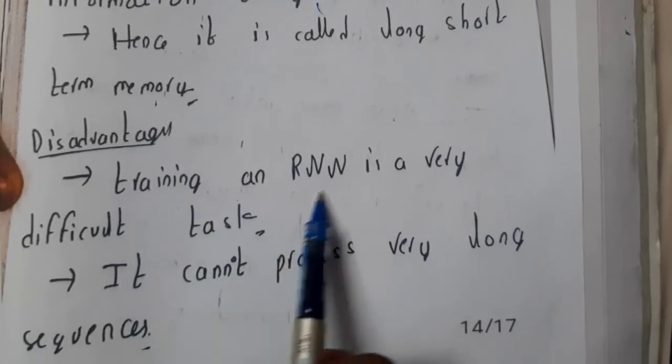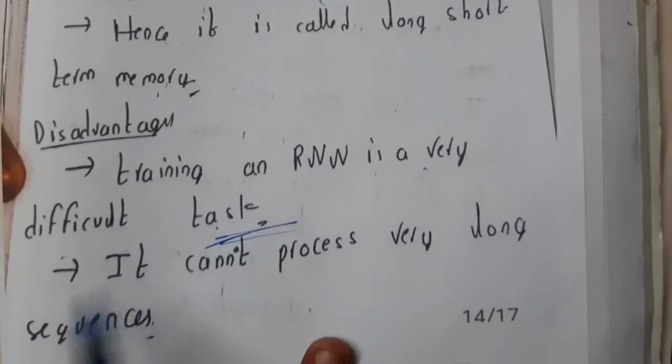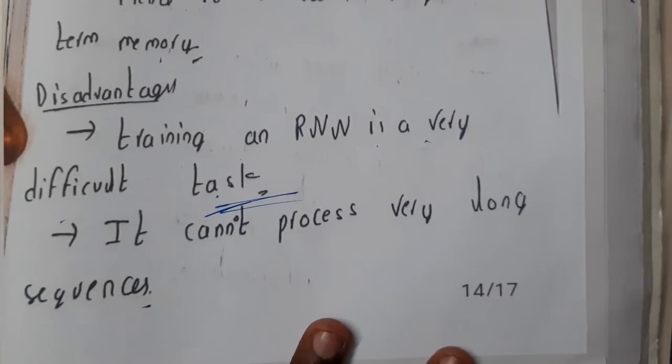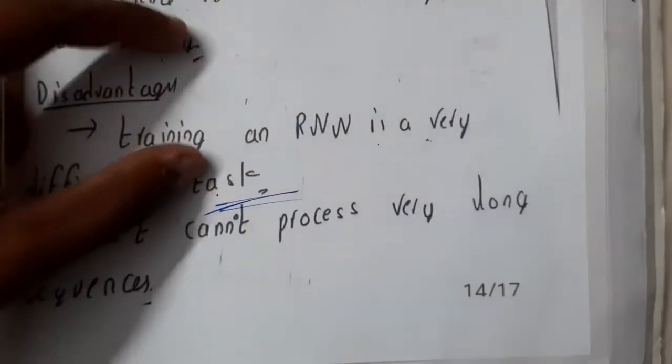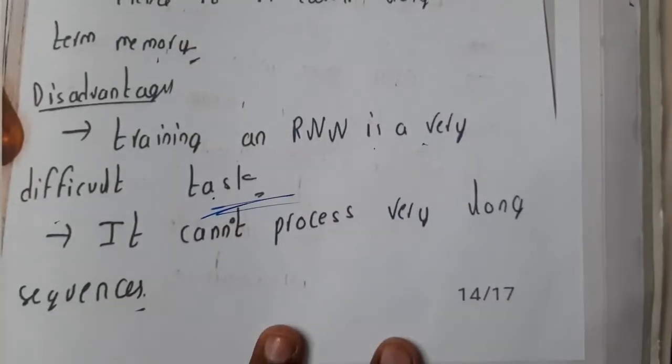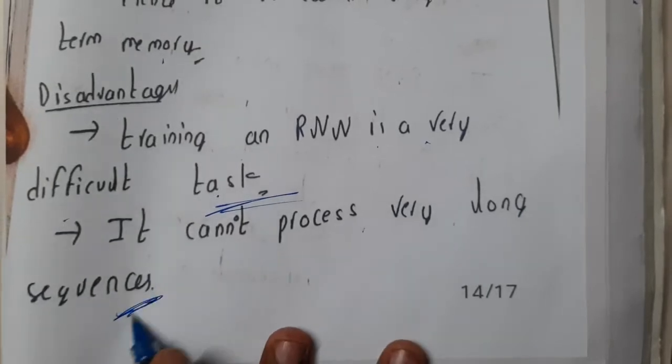The disadvantages are: training an RNN is a very difficult task because it's really complex. Whenever there are many long sequences it's really complex because you need to do it in a small layer. It cannot process very long sequences.